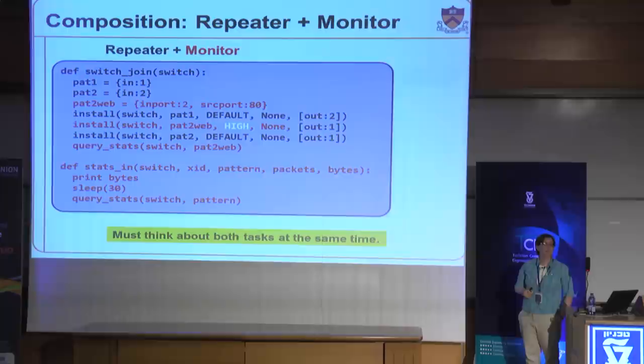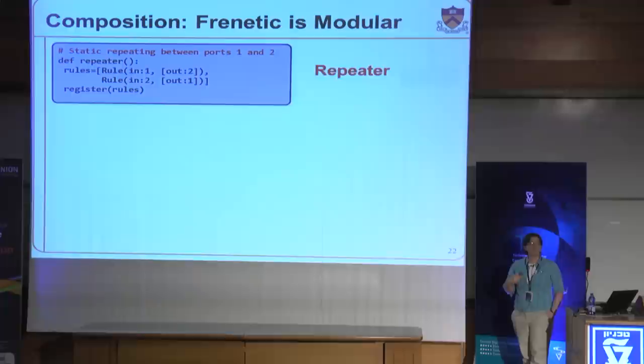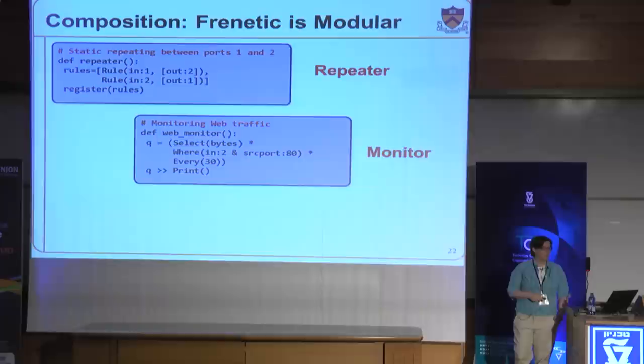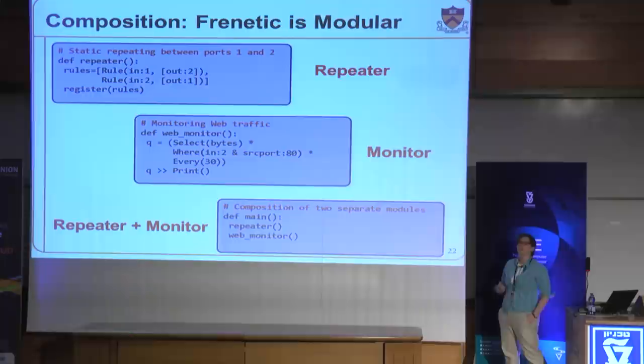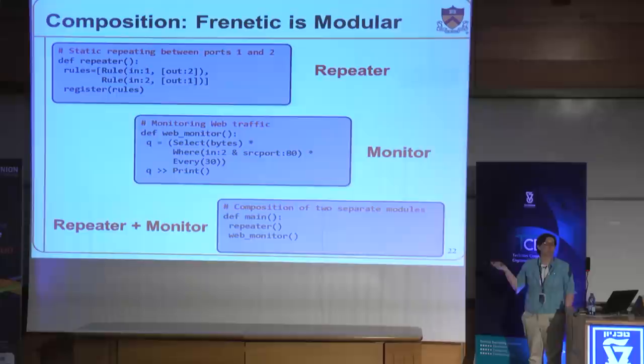In Frenetic you write a simple repeater, write a simple monitor using our SQL-like query language, and then just say 'do both.' From the programmer's point of view, the two modules are written separately — they can be written by different people, one could be purchased software and one locally written — and you just compose them together. The question is how do we actually do it.